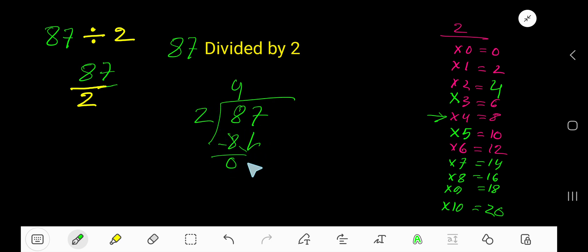Bring down this 7. 2 goes into 7 how many times? Look, 3 times. 2 goes into 7 three times, right? 3 times 2 is 6. Subtract, 1. So your answer is 43 remainder 1.